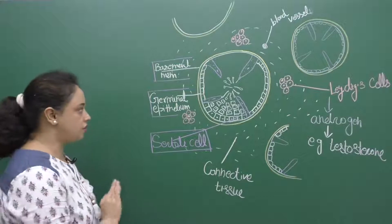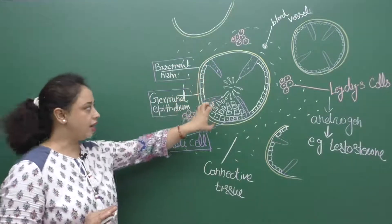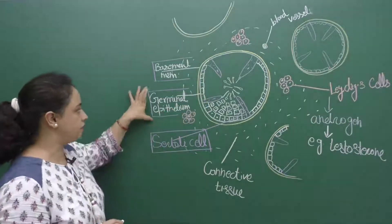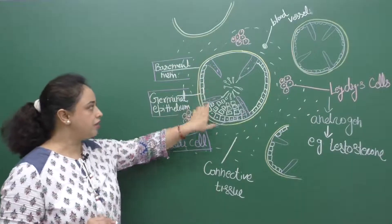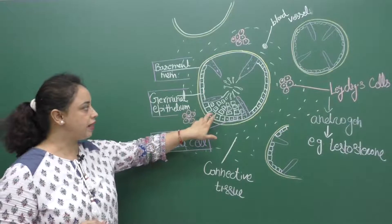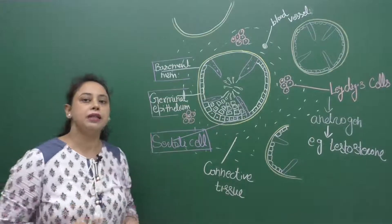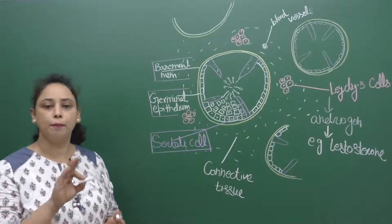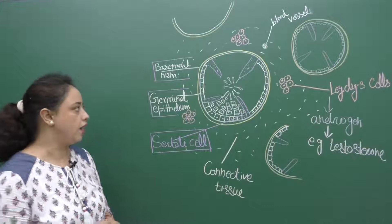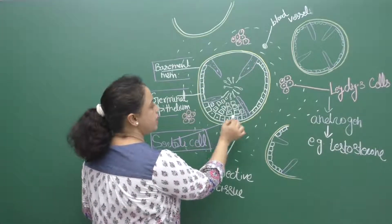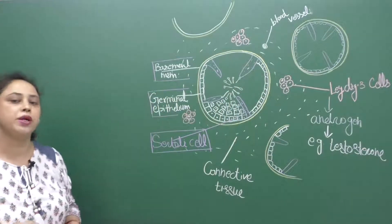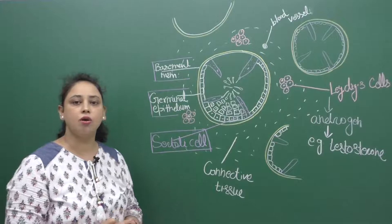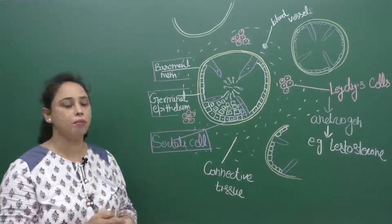Now let's look at the structure of the seminiferous tubule — one is enlarged here. Each seminiferous tubule is lined by germinal epithelium. There is first a basement membrane, and then the germinal epithelium. The germinal epithelium contains two types of cells. The majority are cuboidal cells called male germ cells or spermatogonia — seen as the white portion. At certain places, there are tall cells in the germinal epithelium called Sertoli cells.